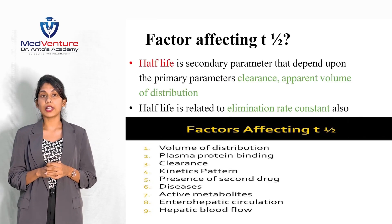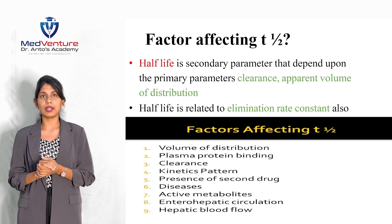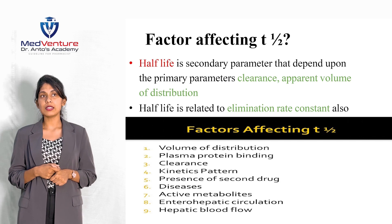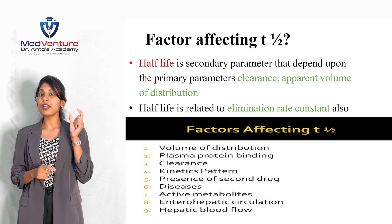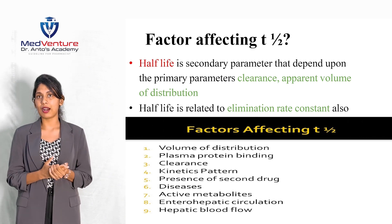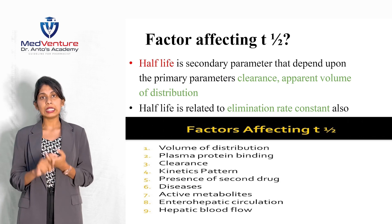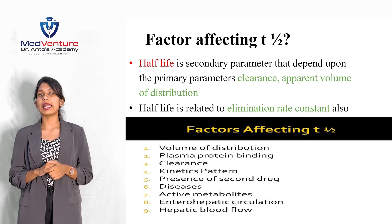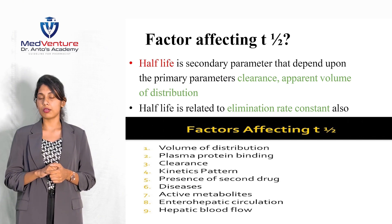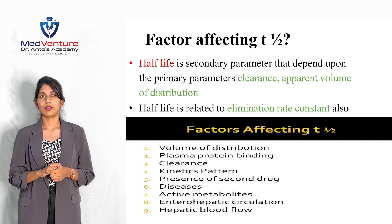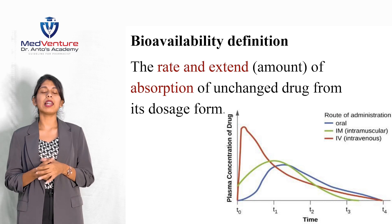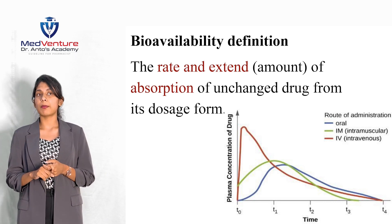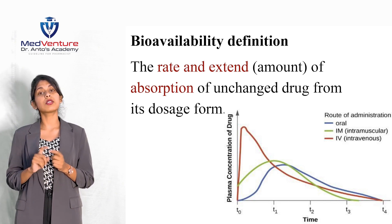Factors affecting half-life: half-life is a secondary parameter that depends upon primary parameters, namely clearance and volume of distribution. Half-life is also related to the elimination rate constant. Bioavailability is defined as the rate and extent of absorption of unchanged drug from its dosage form.